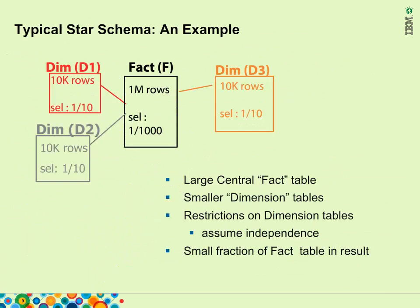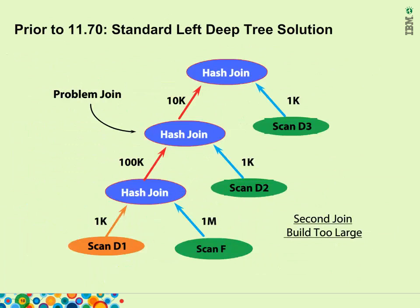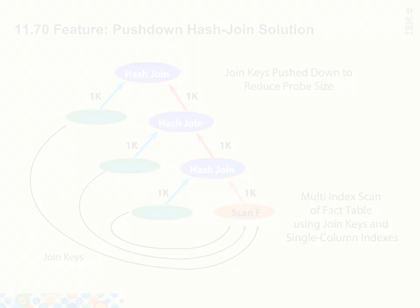Further assume there are three dimension tables d1, d2, d3, each with 10,000 rows and a default selectivity of 1/10 (0.1), meaning each will return about 1,000 rows. Prior to 11.70, a query joining the fact table with all three dimension tables would use a hash join between d1 and f, where the whole fact table is scanned — resulting in 100,000 rows in the intermediate result. This result is then joined with d2, scanning 1k rows from d2, resulting in 10k rows. The final hash join is performed with d3. While this left deep tree method is successful, a lot of data is scanned and intermediate results are large, resulting in high memory consumption and long elapsed time.